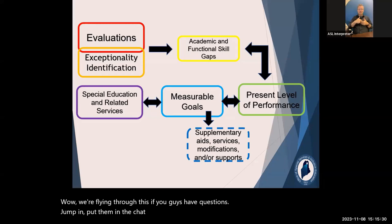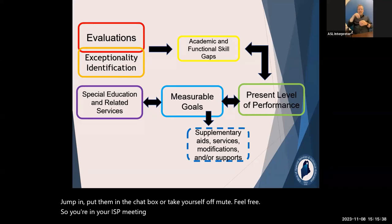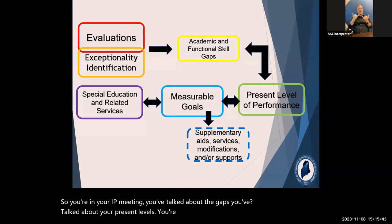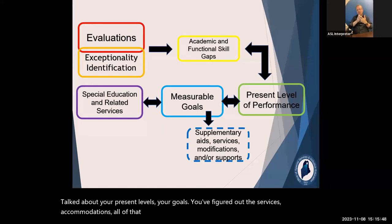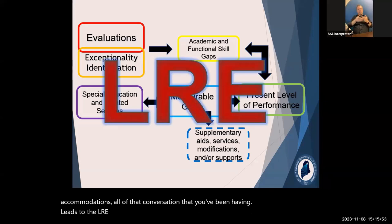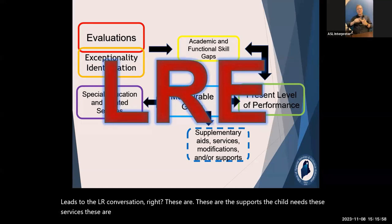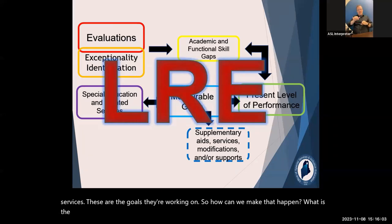In your IEP meeting, after discussing gaps, present levels, goals, services, and accommodations, all of that conversation leads to the LRE conversation. These are the supports the child needs, these are the services, these are the goals — so how can we make that happen? What is the right environment to make this work for this specific student?